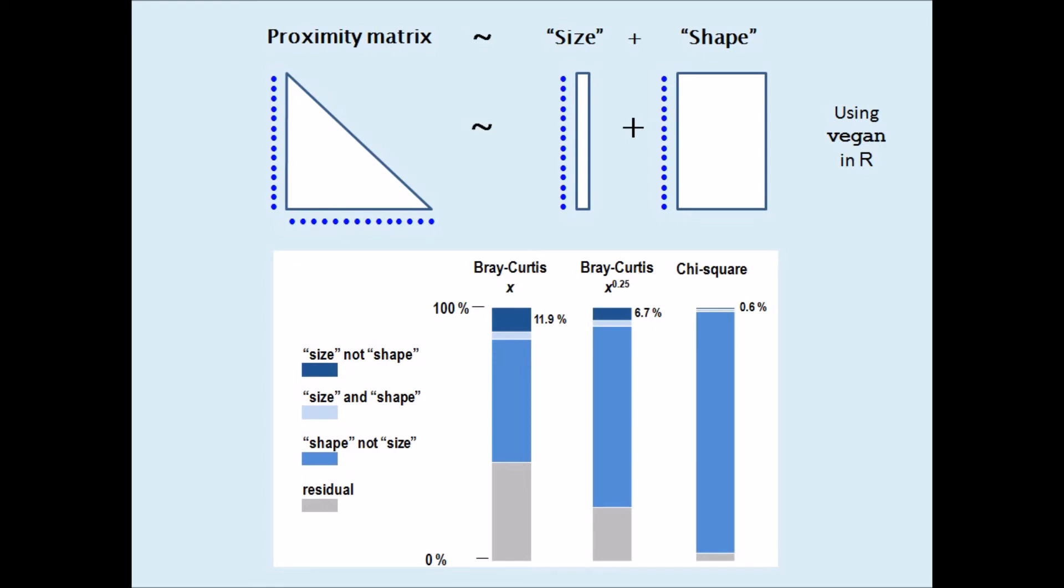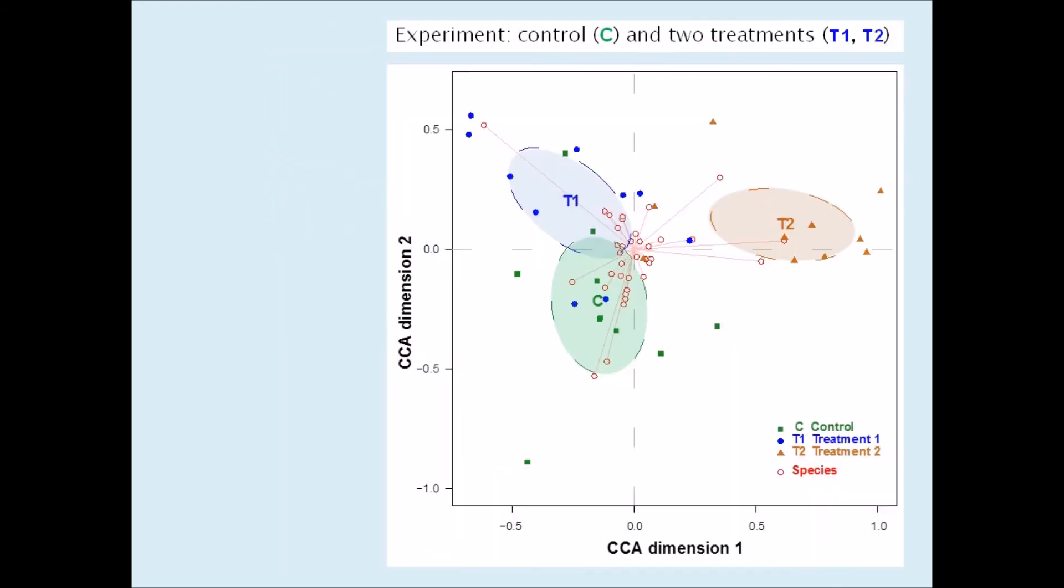Apart from a simulation exercise in the article, which would further convince you that Bray-Curtis incorporates size differences between samples, I also show this CCA ordination of some experimental data involving species counts in several control samples as well as two sets of treatment samples. These 95% confidence ellipses suggest that there is a significant difference between the control and treatment 2, but not between the control and treatment 1. This can be confirmed by permutation testing, sometimes called permanova, where, for example, the p-value of 0.39 concludes that difference between C and T1 is non-significant, and this is a difference in shape because the chi-square distance is used in CCA.